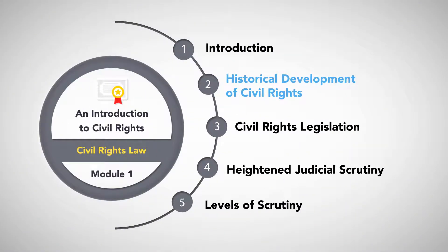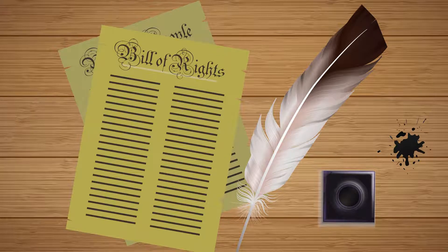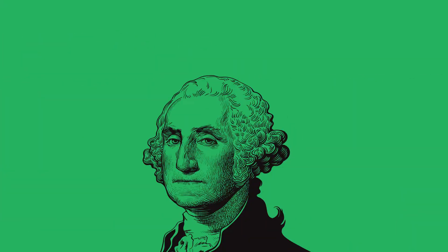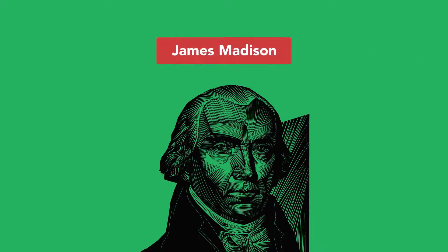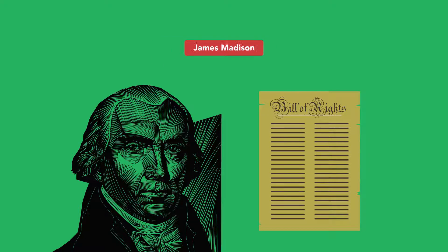Historical Development of Civil Rights. Let's begin our study of civil rights by looking back at the first mention of civil rights in the United States Constitution in the Bill of Rights. During the 1787 Constitutional Convention, concerns arose over a strong central federal government. To placate those worried about this, Founding Father James Madison proposed a Bill of Rights to the Constitution, which was ratified in 1791.